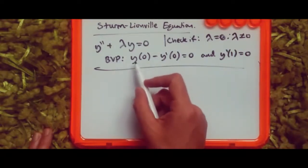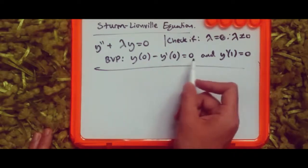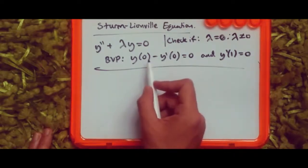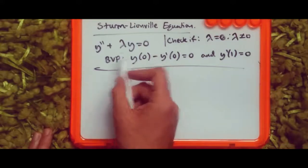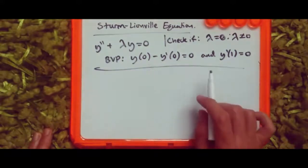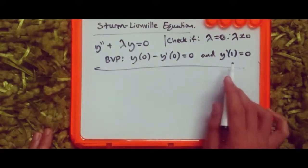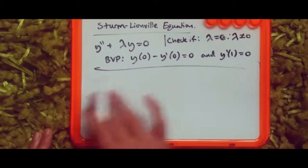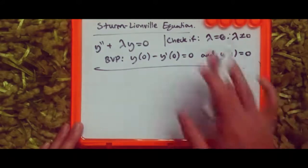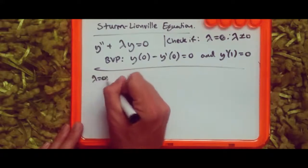This is subject to the boundary value conditions: y(0) minus y'(0) equals zero — here the zeros represent x equals zero, so y is a function of x — and the second condition is y'(1) equals zero. Let's start with the lambda equals zero case.